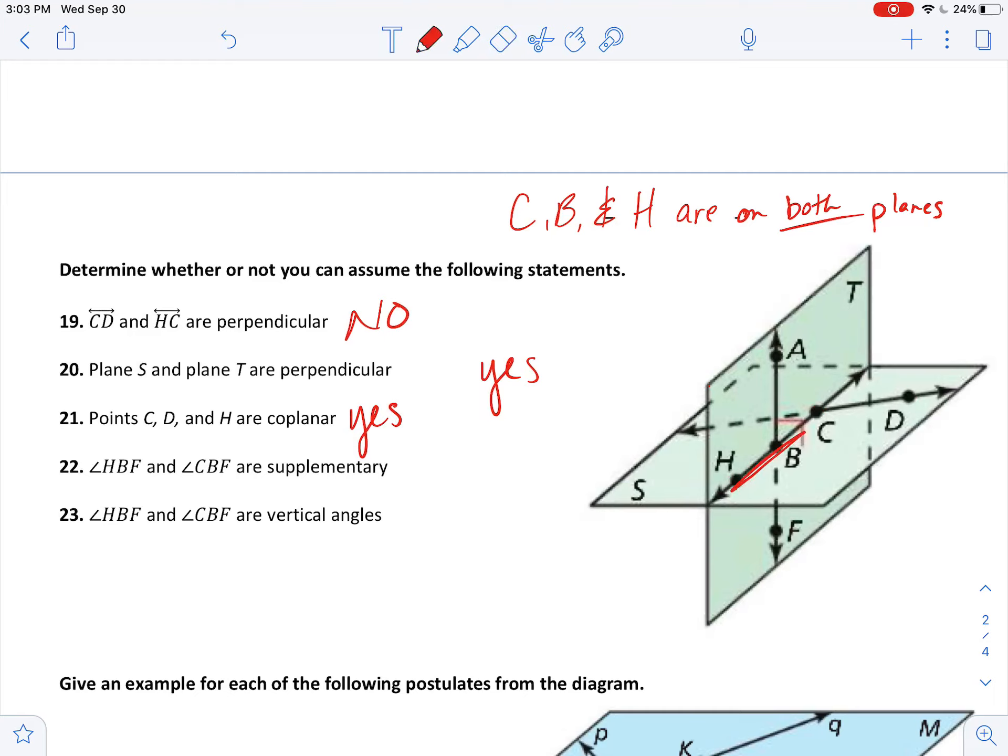This is asking if my two angles are supplementary. So do they form a straight line? And they do. Supplementary, add to 180, form a straight line. And are angle HBF and angle CBF vertical angles?